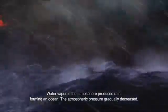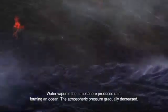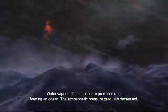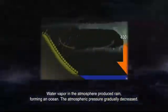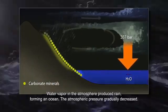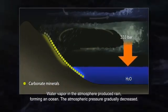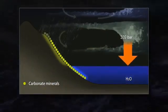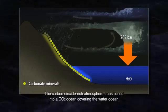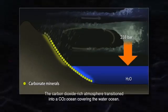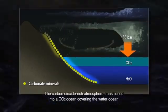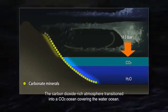Water vapor in the atmosphere produced rain, forming an ocean. The atmospheric pressure gradually decreased. The carbon dioxide-rich atmosphere transitioned into a CO2 ocean covering the water ocean.